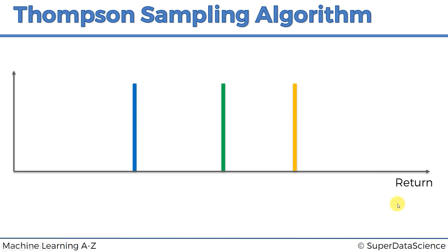These are the actual expected returns of each of the machines. Obviously, if you knew this right away, you would say that machine number three — the yellow machine — is the best one, because it has the highest expected return. You'd always just bet on this one. But again, you don't know this yet.